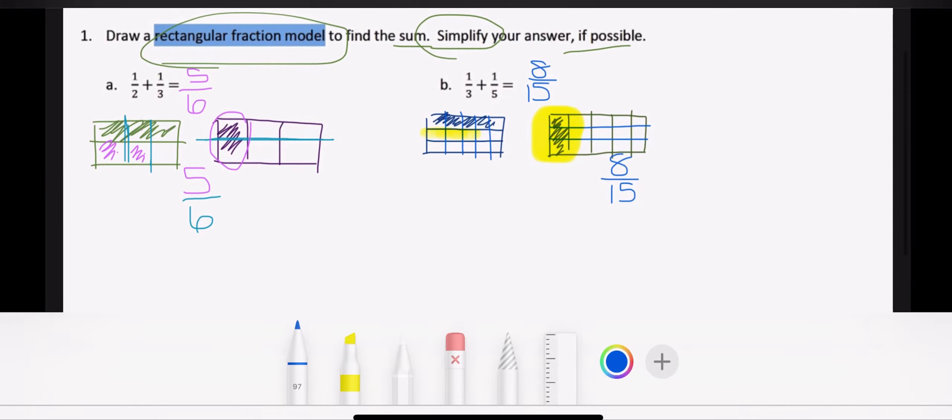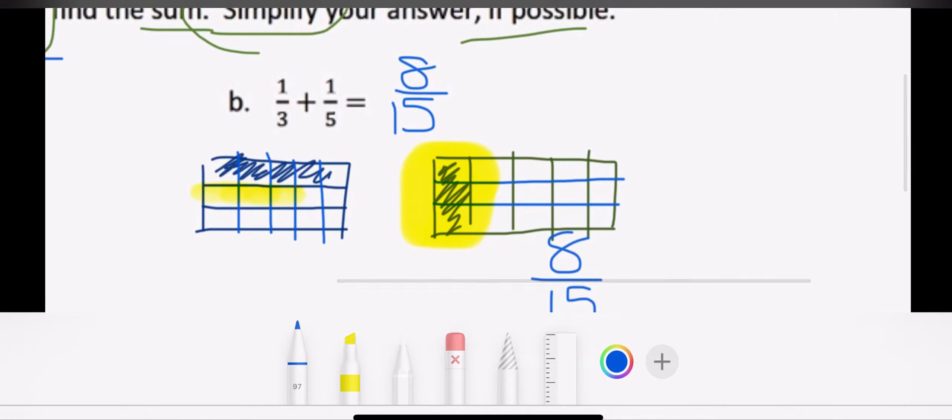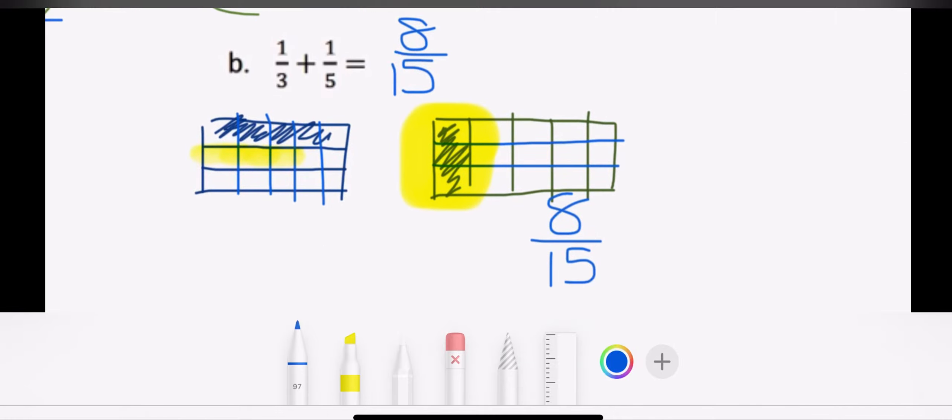So that's how we would use that rectangular fraction model to find the sum. And my last step was try to simplify. So in my head, I'm thinking, okay, I know that eight can be divided evenly by two, but 15 can't be divided evenly by two. When I try three, eight divided by three is not going to give me an even number or a whole number, I should say, because it's going to leave me with a remainder or with a decimal. I know four won't work. So now I'm up to five. So I know that my answer is already simplified. So my sum of one third plus one fifth is going to be eight fifteenths. And that is already simplified.